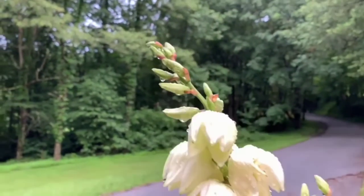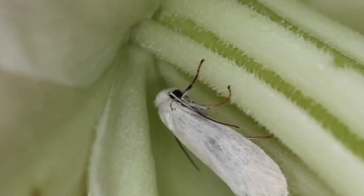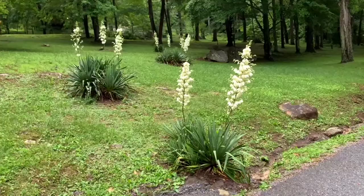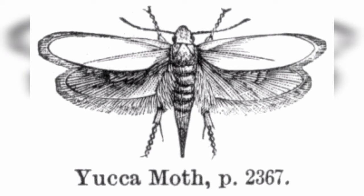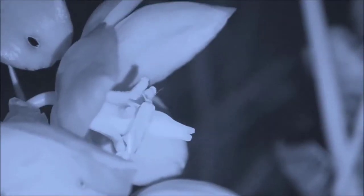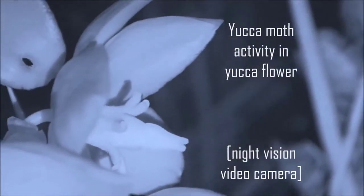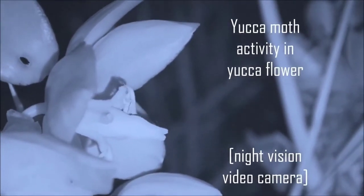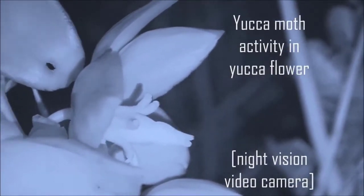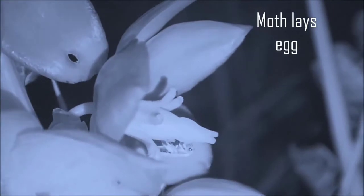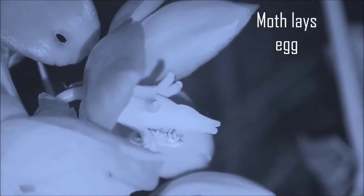The yucca moths are small insects that lay eggs on the yucca flowers. The females are known to collect pollen grains from the stamens of the yucca flower, and with the help of their long and curved proboscis, the moth then flies to another flower, sits on top of the stigma, and deposits the collected pollen grains. Since the pollen is inserted into the stigma, fertilization is ensured.